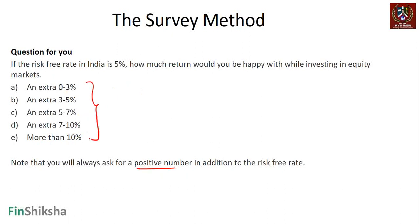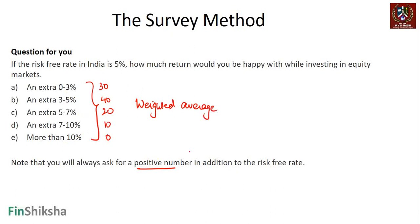Out of 100 people surveyed, you could take a weighted average — say 30 people expect one range, 40 another, 20 another, and 10 another. The weighted average of all the responses you get becomes your equity risk premium. It's the simplest method because you're just going and asking a lot of people.